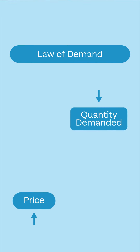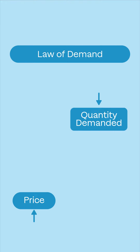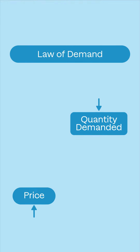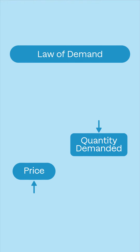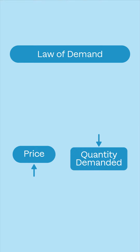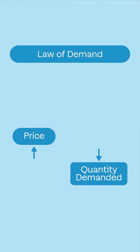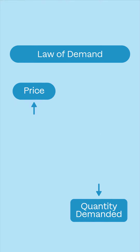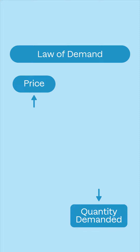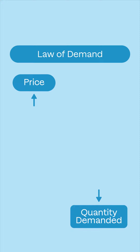This phenomenon helps illustrate the law of demand. A fall in price generally results in a higher quantity demanded, while a rise in price generally results in a lower quantity demanded. Price and quantity demanded have an inverse relationship when other variables are held constant.